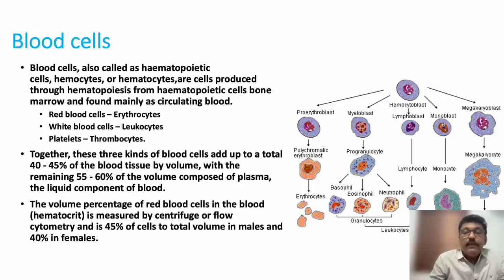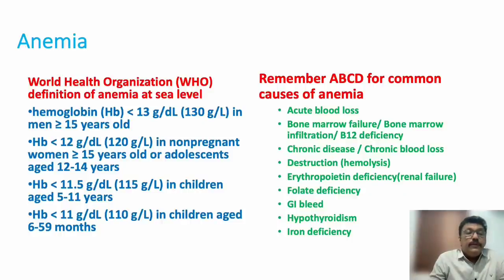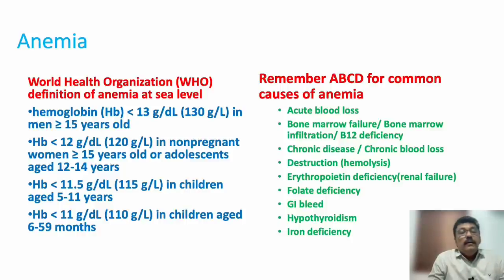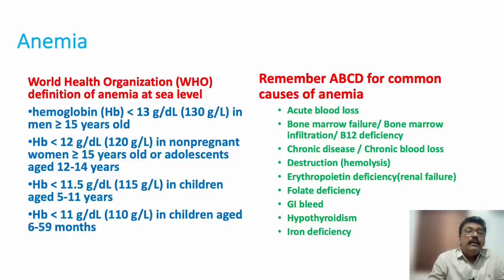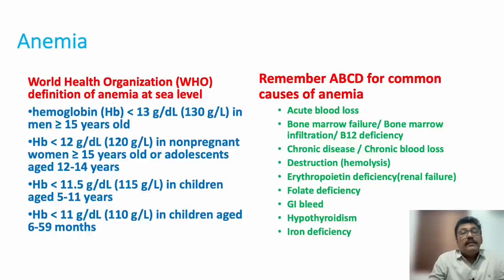Anemia definition by WHO at sea level: hemoglobin less than 13 g/dL in men, less than 12 g/dL in non-pregnant women and adolescents, less than 11.5 g/dL in children aged 5 to 11 years, and less than 11 g/dL in children aged 6 to 59 months. Depending on age and other factors it may slightly vary.